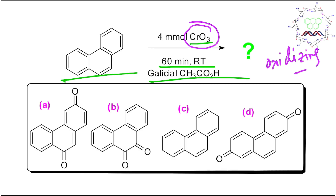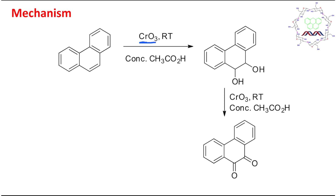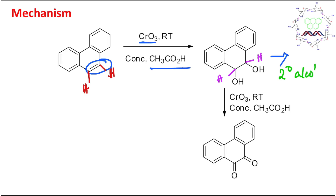Let's learn the mechanism now. In the case of chromium trioxide in acid medium, it will first oxidize the compound into the corresponding diol — so you may consider this a dihydroxylation reaction first. This diol is also a secondary alcohol because there were two hydrogens initially. In the second phase, this secondary alcohol gets oxidized in the presence of the chromium(VI) reagent in acidic medium to produce a diketone. Both sides are converted into a diketone. The reaction stops here because the conditions — 60 minutes, room temperature — are not drastic enough to proceed further.